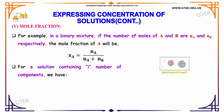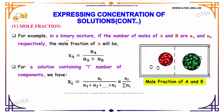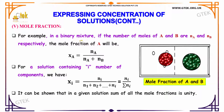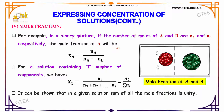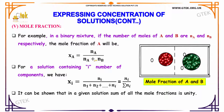For example, in a binary mixture, if the number of moles of A and B are nA and nB, the mole fraction of A is given by: xA is equal to nA divided by nA plus nB.